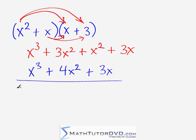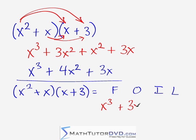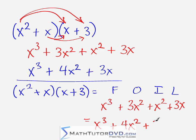Now let me rewrite the problem using what you're typically taught in an algebra class: (x squared plus x)(x plus 3). Using FOIL — F, O, I, L — the first terms are x squared times x, which gives you x to the third power. The outside terms: 3 times x squared gives you 3x squared. The inside terms: x times x gives you x squared. And the last terms: x times 3 gives you 3x. When you simplify: x cubed, then 3 plus 1 is 4, so 4x squared, plus 3x.